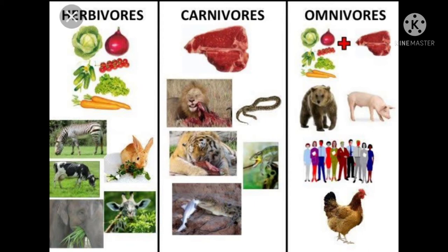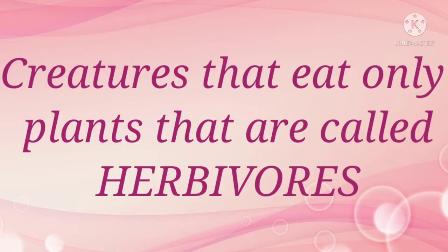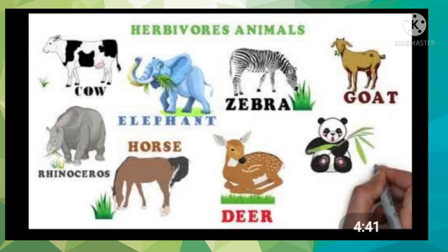Herbivores — creatures that eat only plants as food are called herbivores. Examples of herbivores are cow and goat.